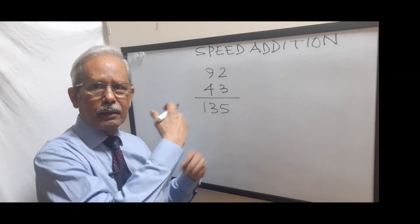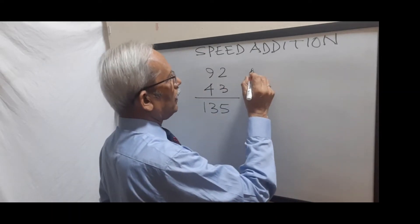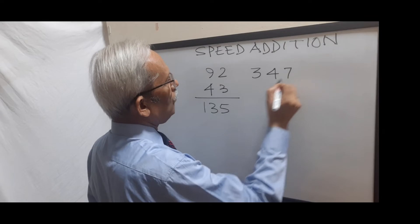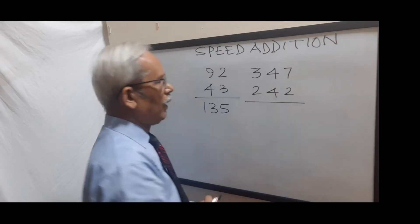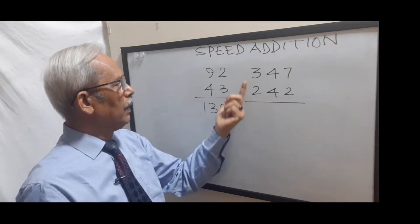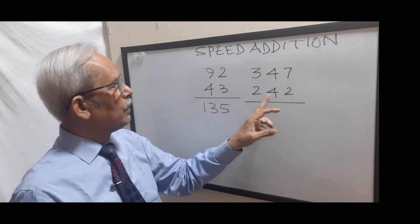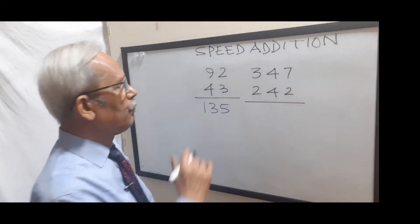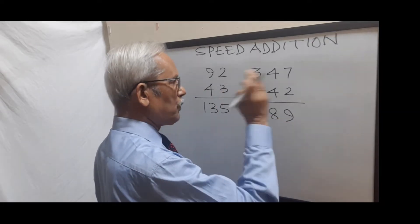This makes the addition faster. Taking another example: 347 plus 242. Here we take the hundreds place: 300 plus 200 is 500. Then 40 plus 40 is 80 — so 580. And 7 plus 2 is 9 — so 589. You can do the calculation mentally from left to right.